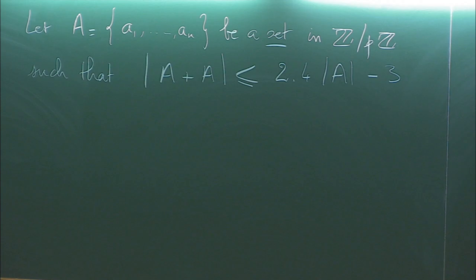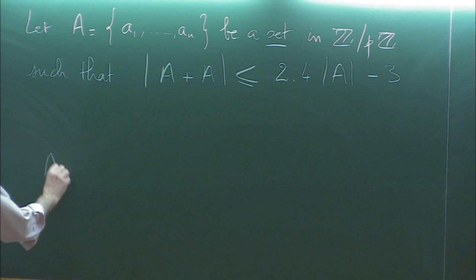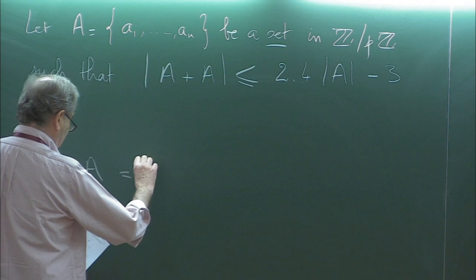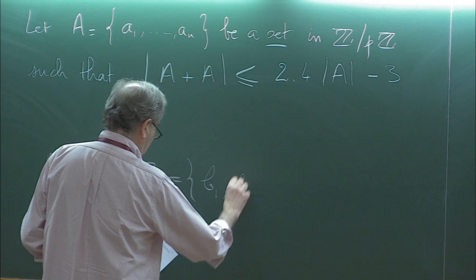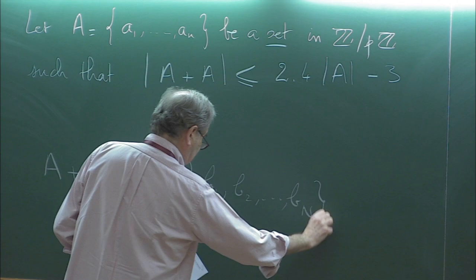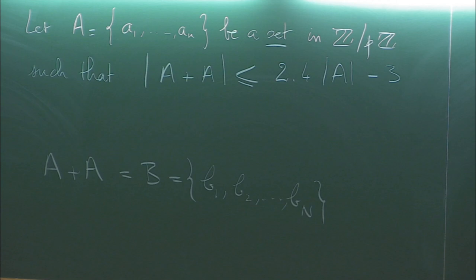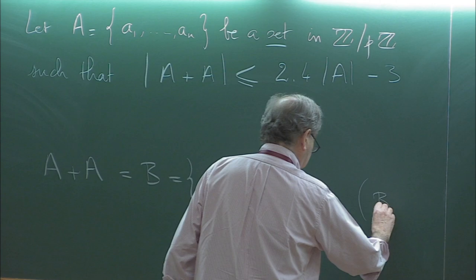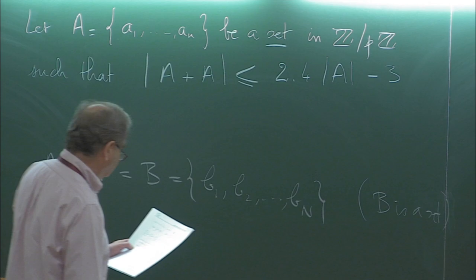So I will state the result later on and start to see what I can do. Let us work on this. A + A, I write it as the set B = {b₁, b₂, …, bₙ}. Again, B is a set — elements are counted only once.